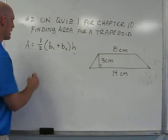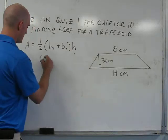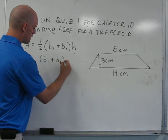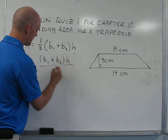Or you could write it like this: base one, plus base two, times the height, divided by two.